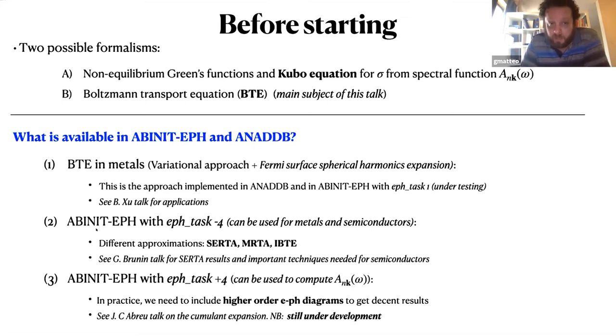We have seen in the previous talk that if you are interested in metals we can use the Allen's approach, so the variational method plus this expansion to compute the Eliashberg function and the conductivity in metals. If we use the ABINIT version then we can handle metals as well as semiconductors but with a different approach that does not rely on this variational technique and the basis set. Some results for metals as well as some important techniques needed for semiconductors are discussed by Guillaume in the next talk.